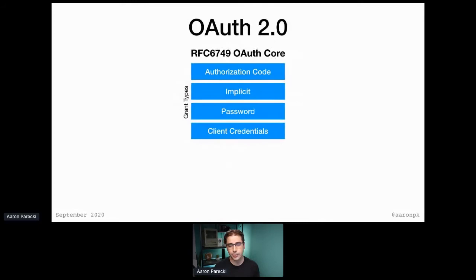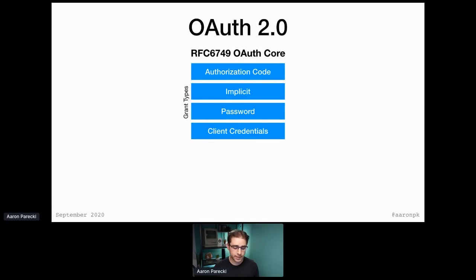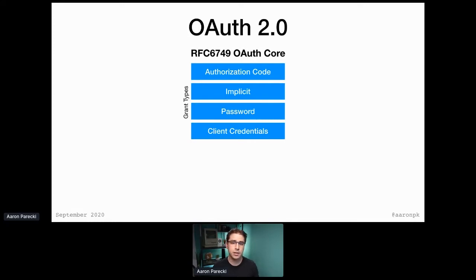A lot of the reasons for OAuth 2 were because there were challenges with OAuth 1 that made it difficult or impossible to deploy in certain scenarios. OAuth 2 started from scratch and rebuilt the whole protocol. It's actually a collection of documents, starting with the OAuth core document, RFC 6749. This defines a handful of what are called grant types — ways to get an access token. At the end of all these flows, the app has an access token, called a bearer token.